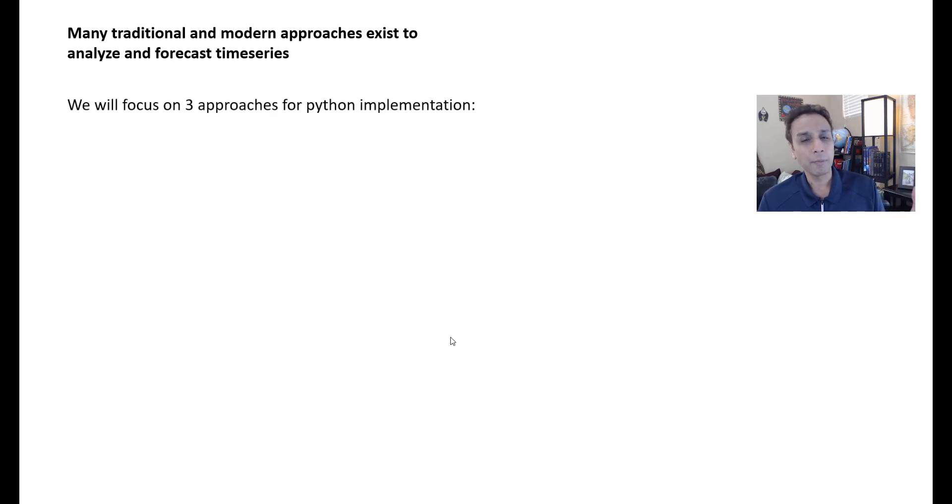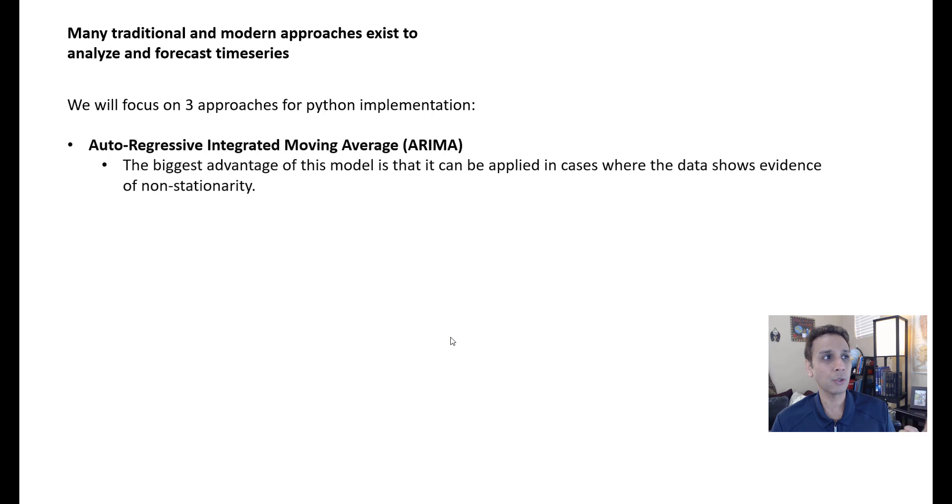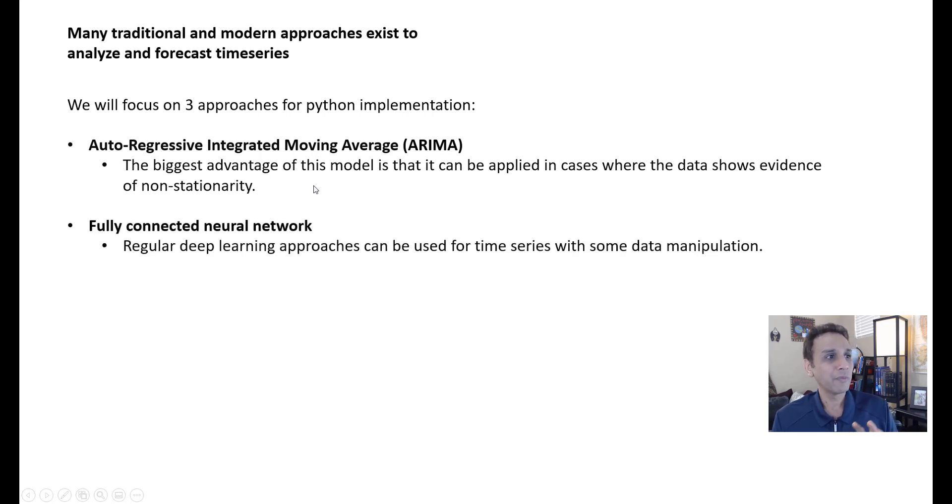I'm going to focus only on three primary approaches. One is autoregressive, it's called ARIMA. AR stands for autoregressive and MA stands for moving average. We're going to put them together and put integrated in the middle. It's very widely used, that's why I'm not talking about anything else other than this.